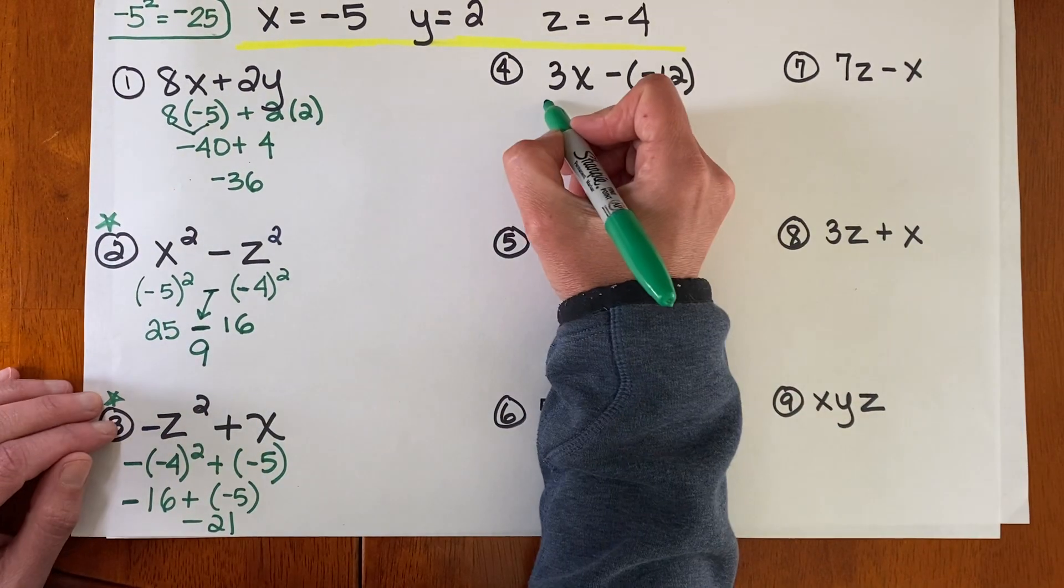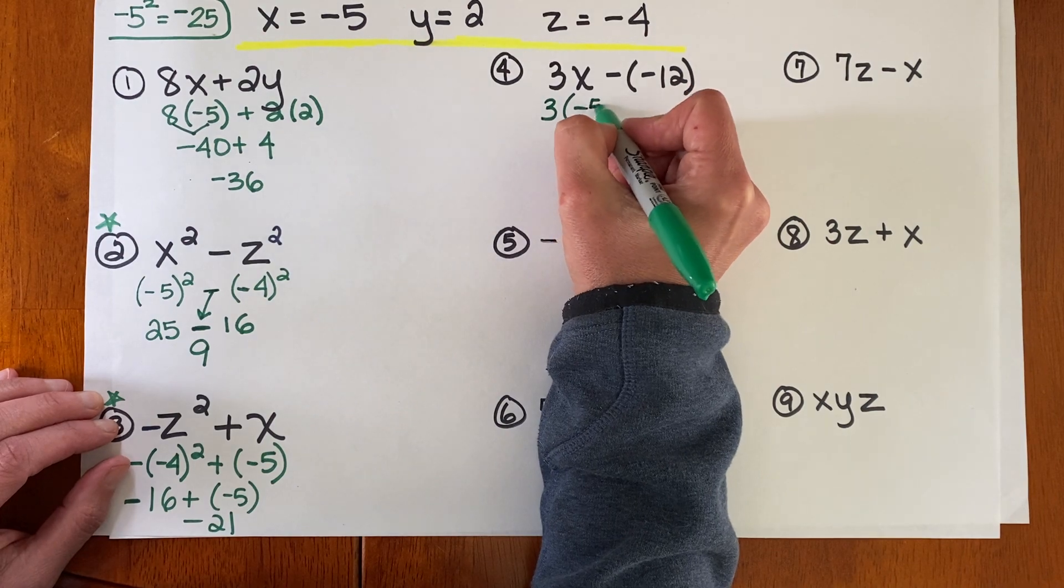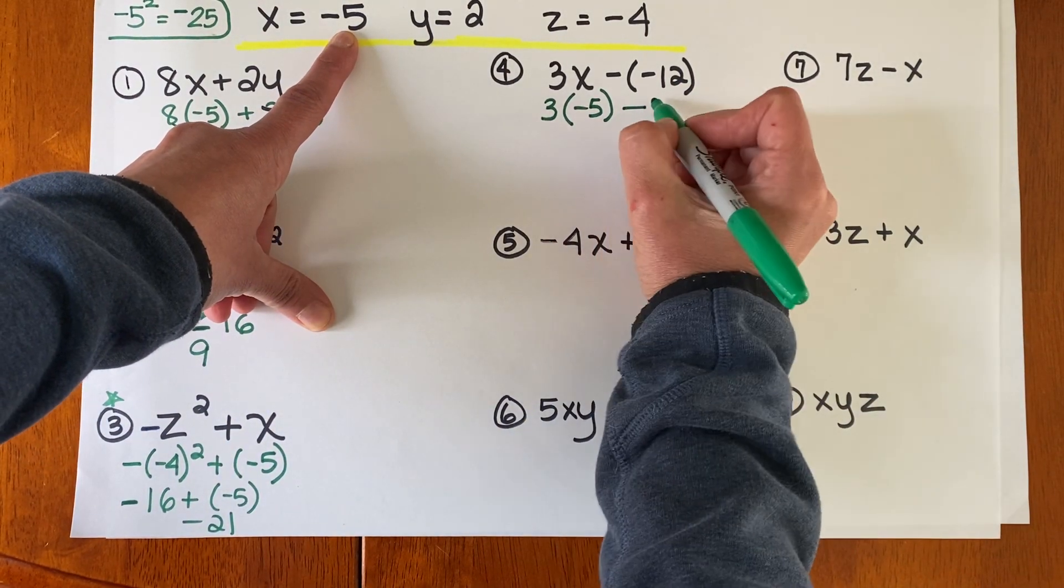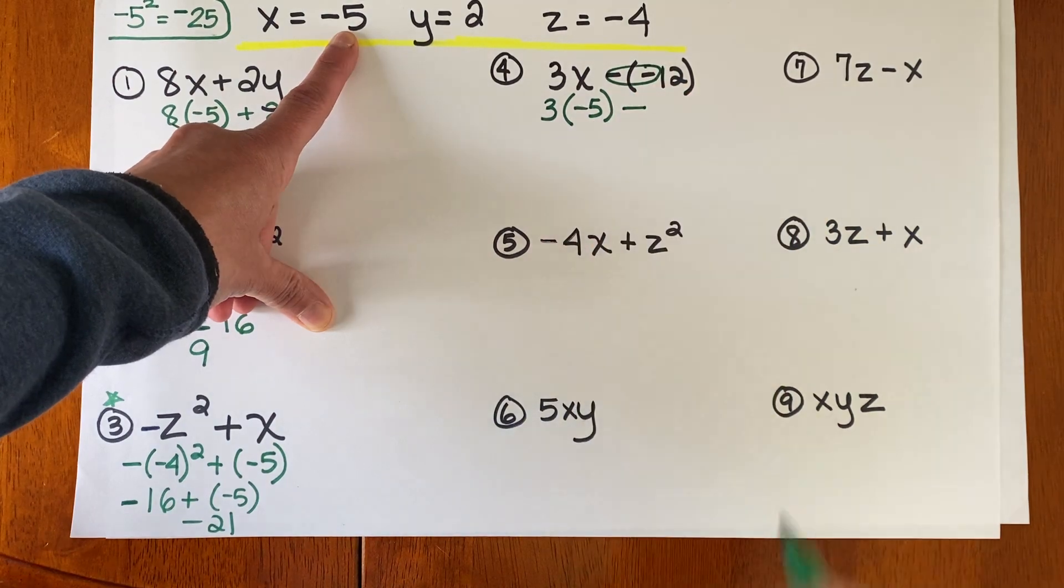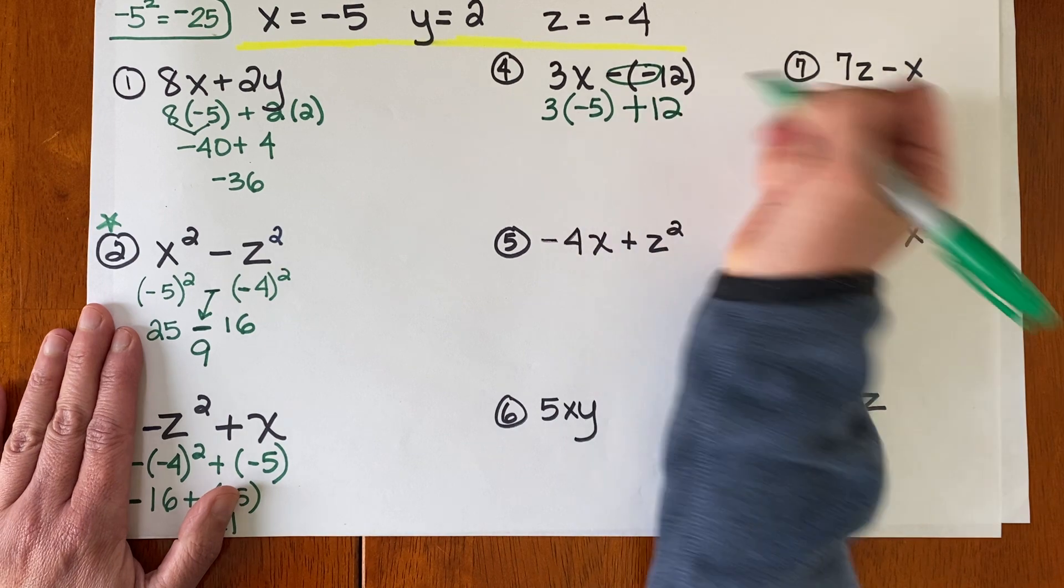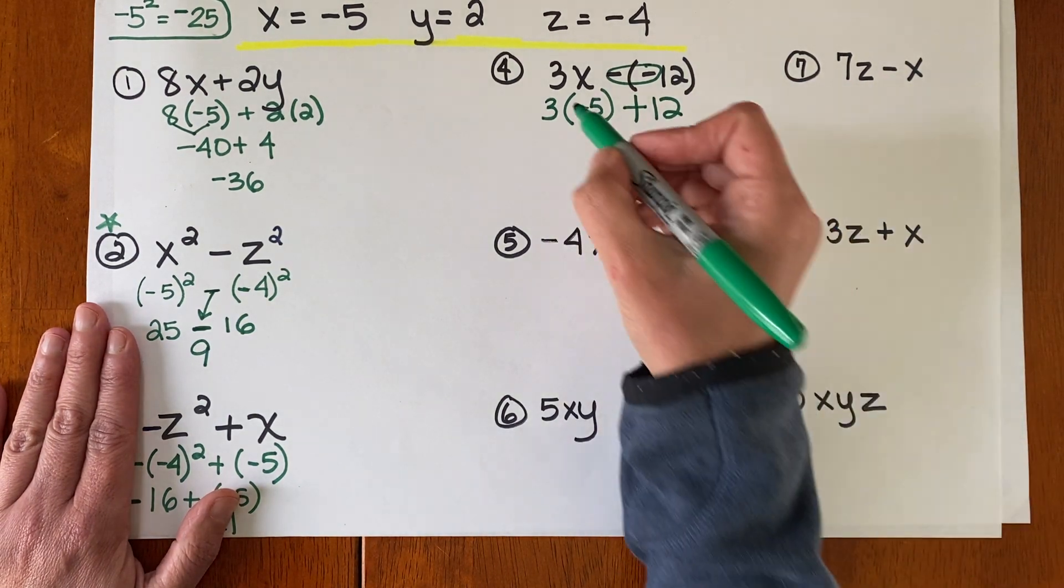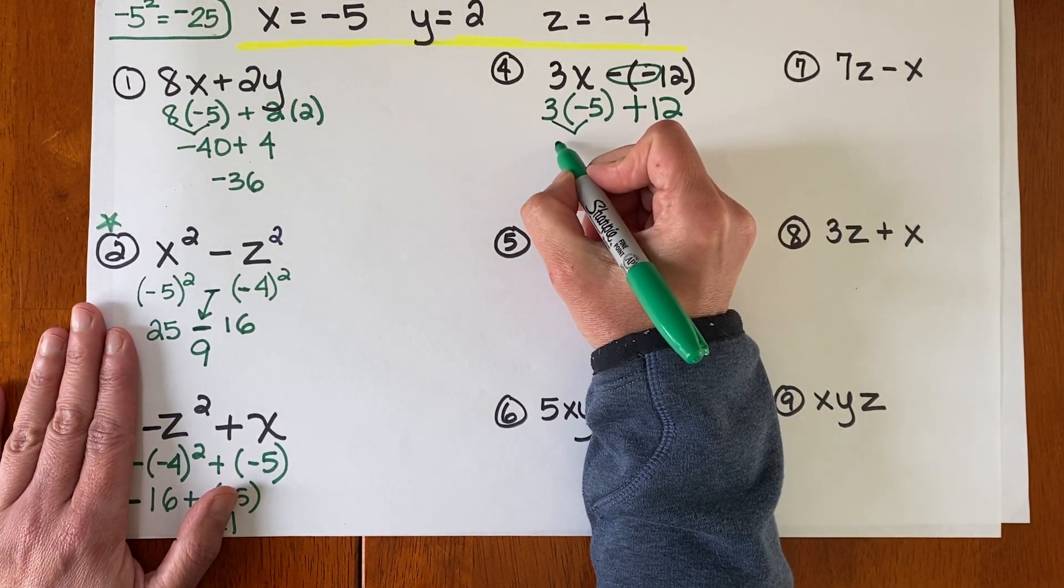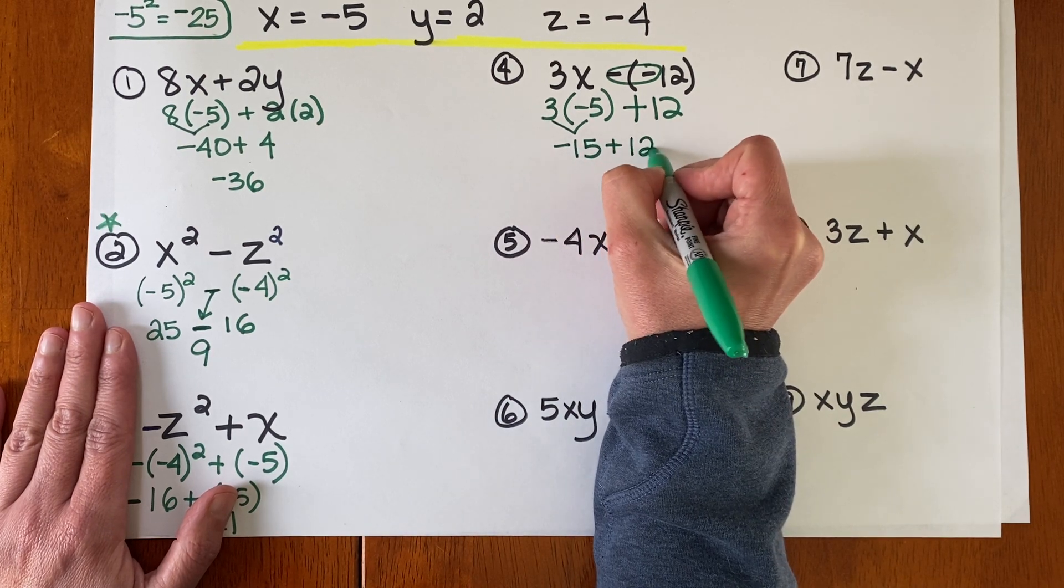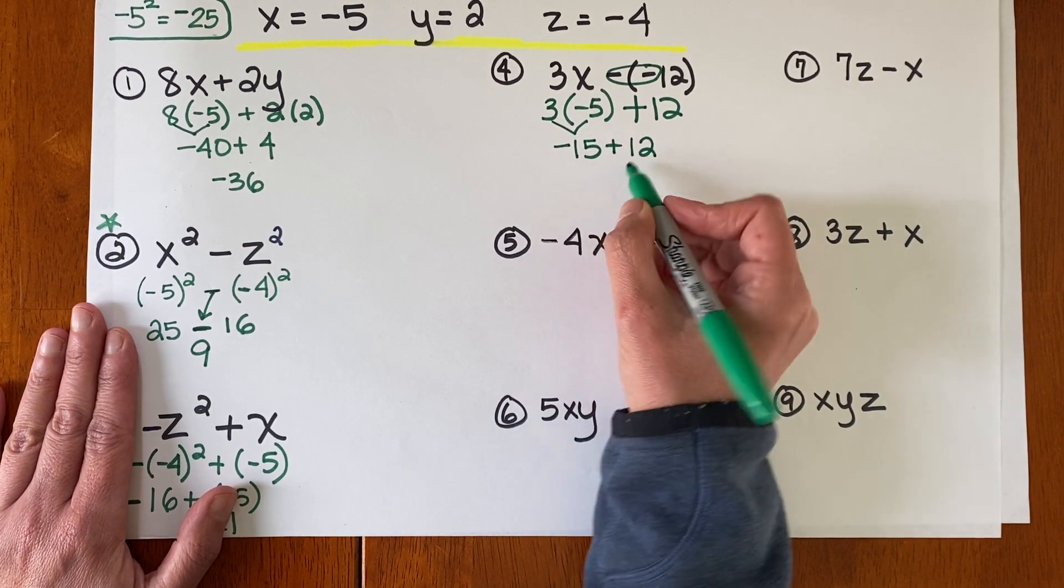Number 4. 3 times negative 5, right? Substituting in. Minus. Now I can make those two a plus. Plus 12. Order of operations. I'm doing my multiplication. And then I'm adding or combining my debt with my money.